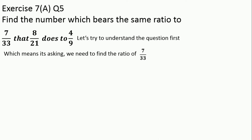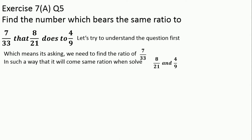First of all we need to understand the question — question understanding is very important. Basically, the question is asking us to find a ratio with 7/33 in such a way that it gives the same result as when we solve 8/21 and 4/9.